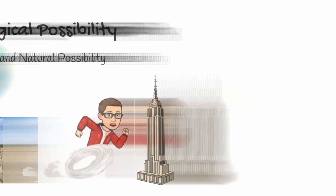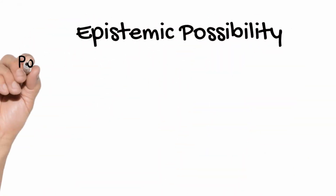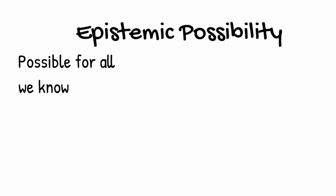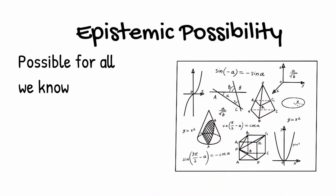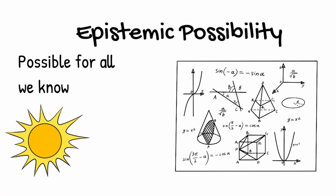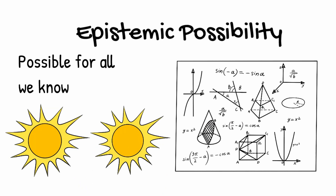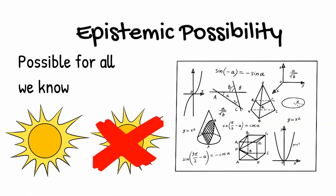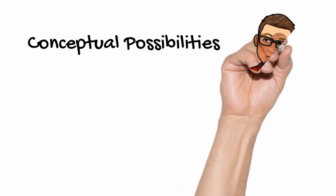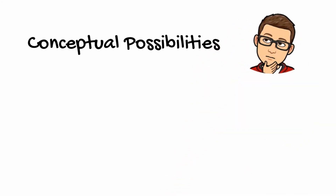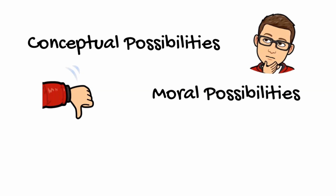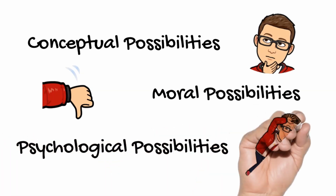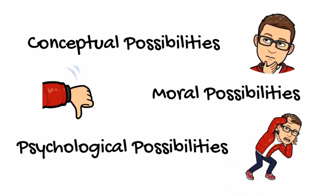Another useful type of possibility to be aware of is epistemic possibility, which means that something is possible for all we know. For example, for all we know, certain mathematical claims could be true or equally false. By contrast, suppose I know for certain that it's sunny in London — it's not then epistemically possible for me to think that it's not sunny in London, since I know that it is. There are even further types of possibility, such as conceptual possibility — a concept is possible if it has no internal contradiction or incoherence — moral possibilities, where something is possible if compatible with the rules of morality, and psychological impossibilities, such as it being impossible for you to eat a worm given your aversion to them.